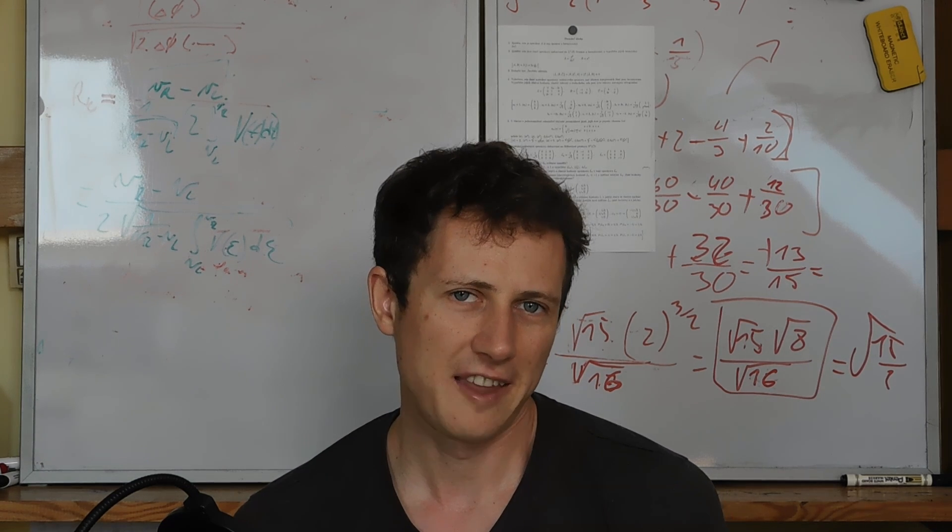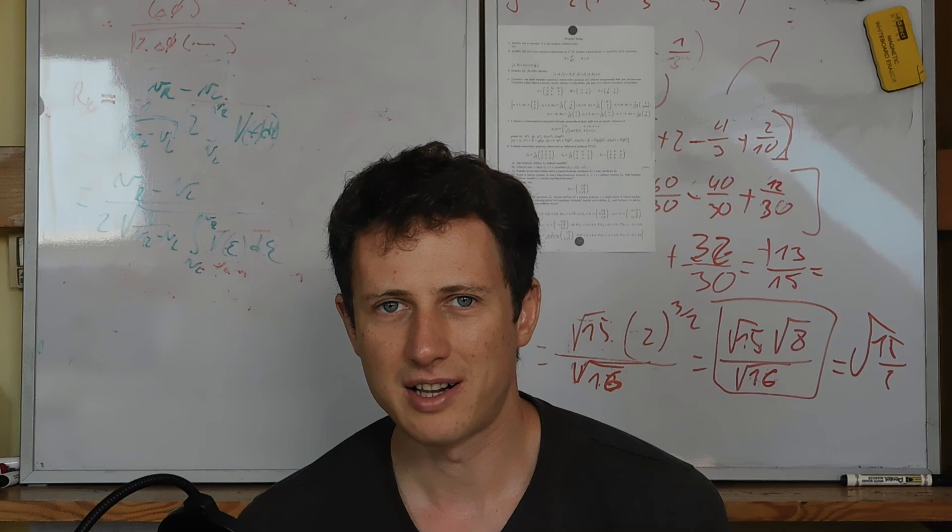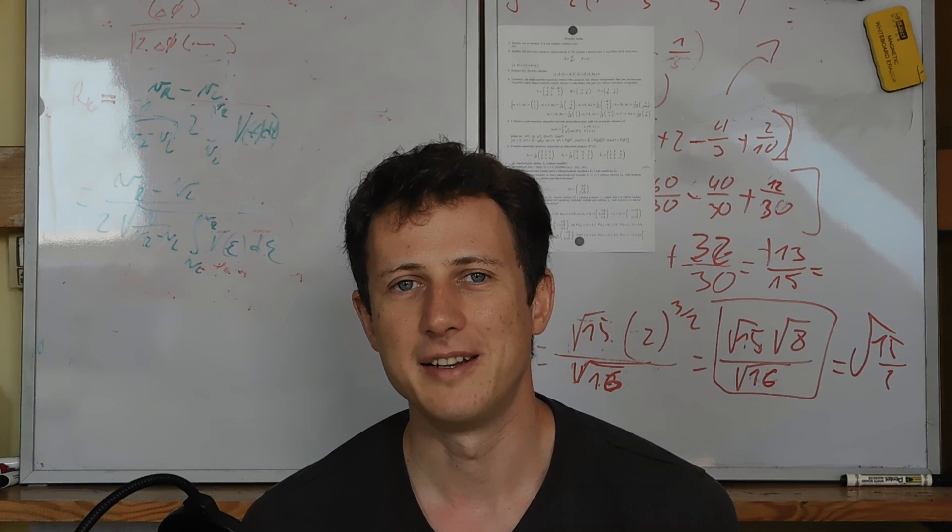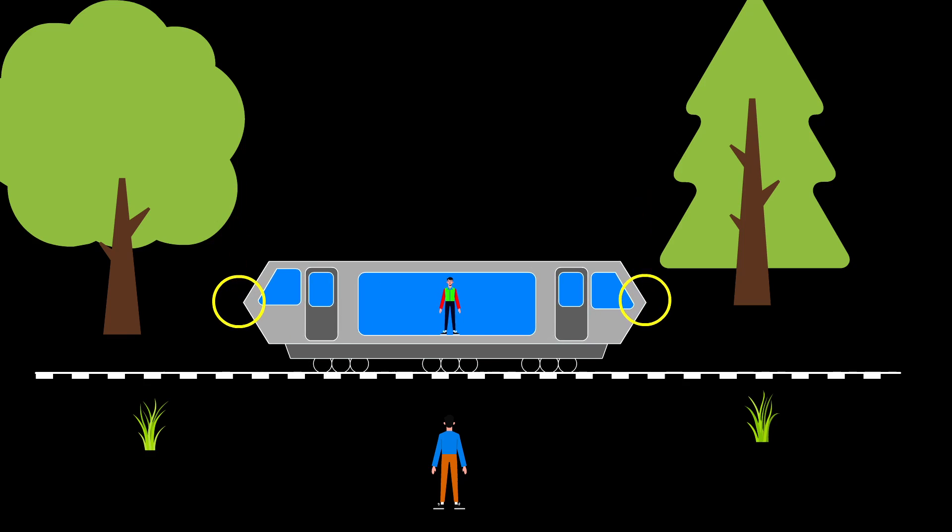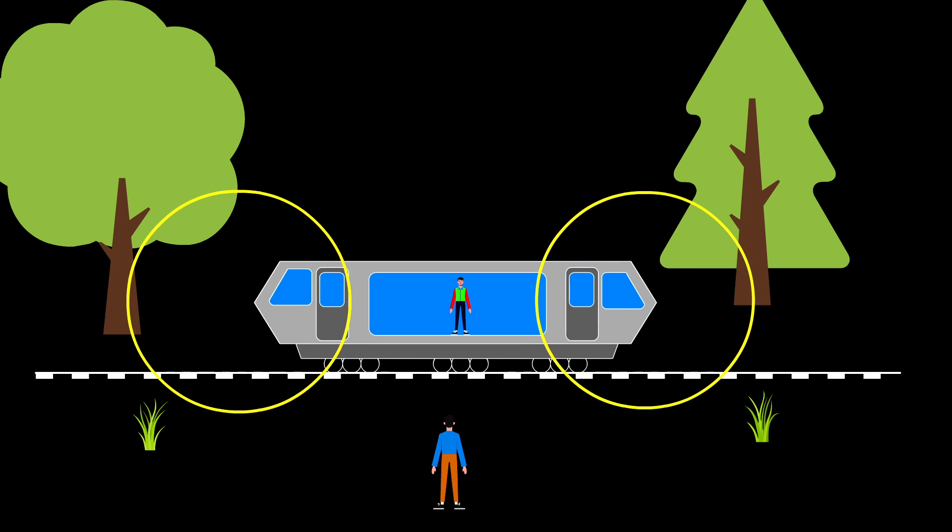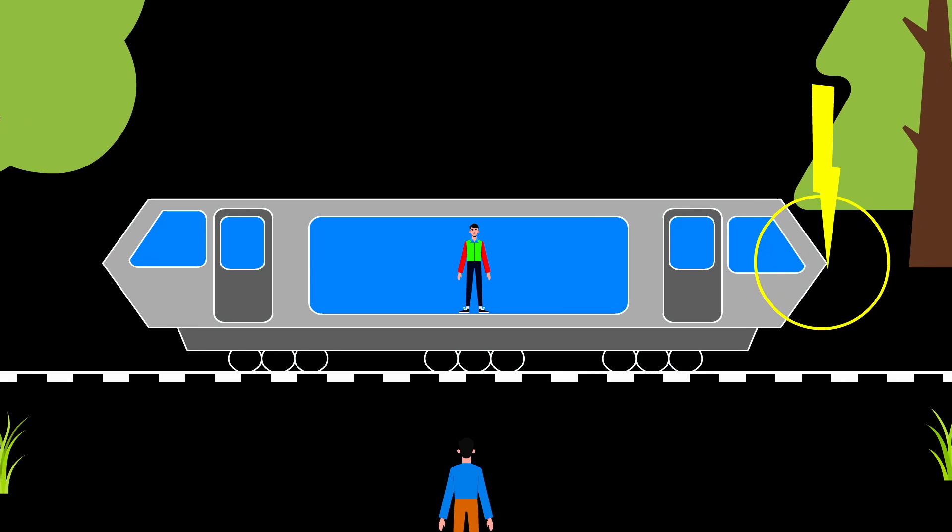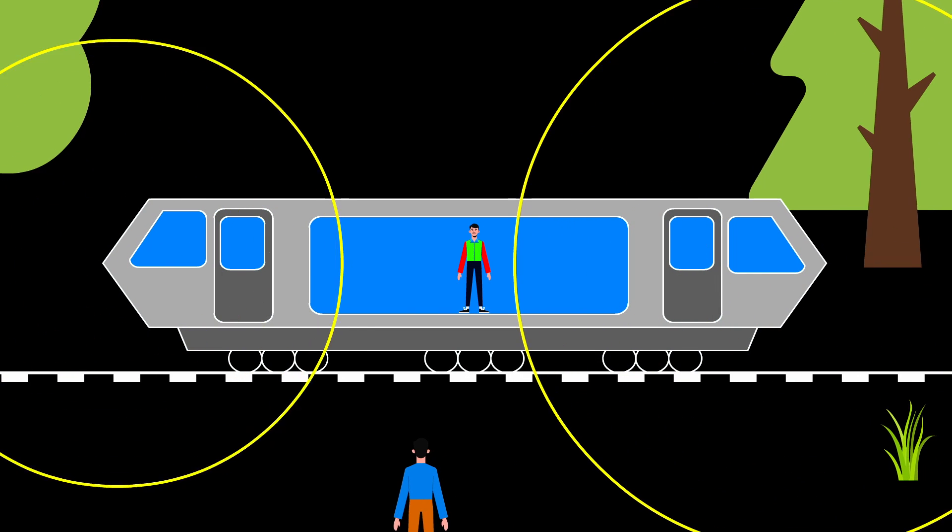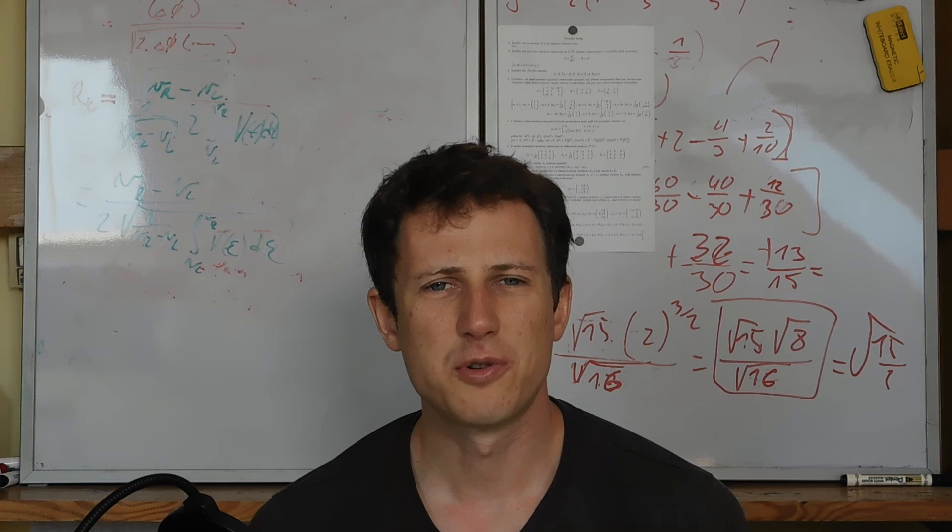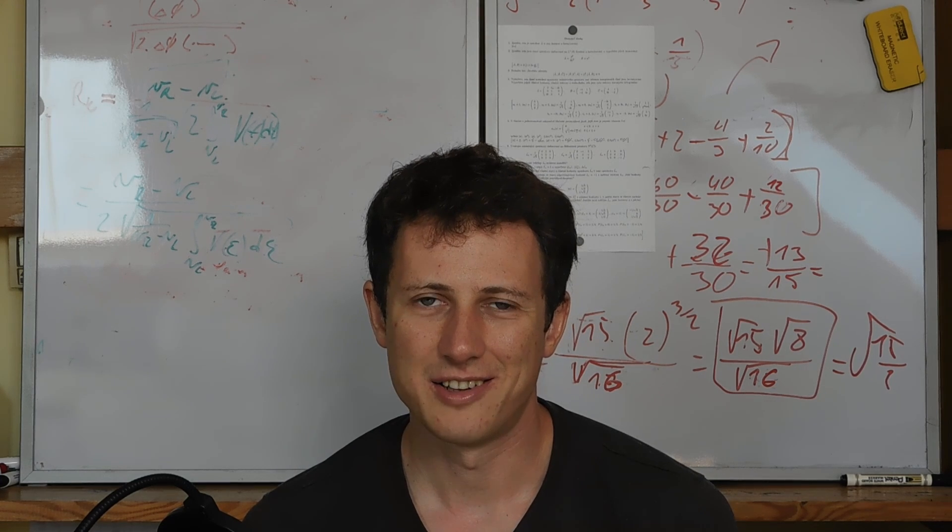And one important thing that becomes relative in special relativity is simultaneity. This basically means that if one observer experiences two spatially separated events at the same time, this won't be true for an observer that is moving relative to these events. And this is the crucial ingredient to understand the length contraction.